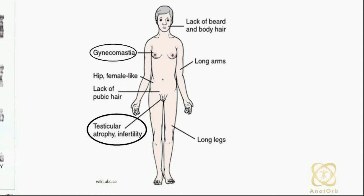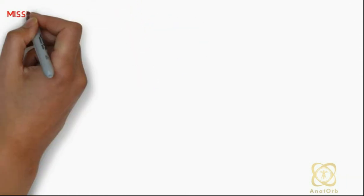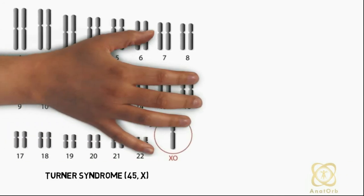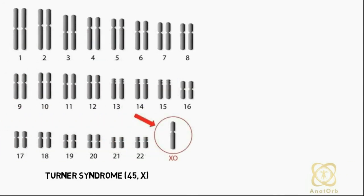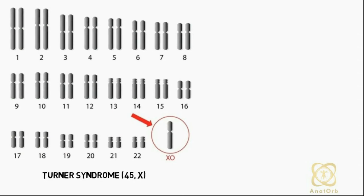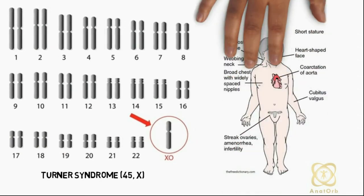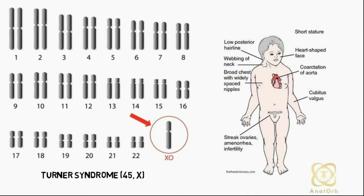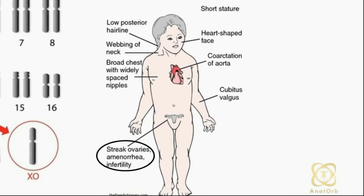An example of a missing copy abnormality is Turner syndrome, which occurs when a female is born with only one X chromosome. It is characterized by the absence of the ovaries, short stature, and a broad chest with widely spaced nipples.